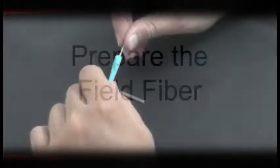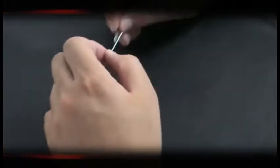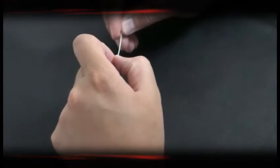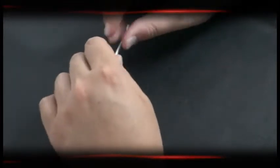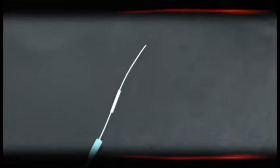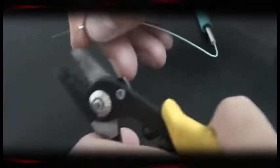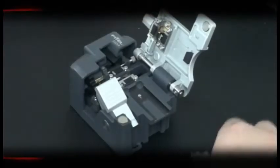The preparation of the SOC is complete. Now, let's prepare the field fiber. First, slide the 900-micron strain relief boot and then the SOC Fusion Splice Protection Sleeve onto the 900-micron field fiber. Strip, clean, and cleave the field fiber to a 10-millimeter cleave length.